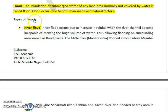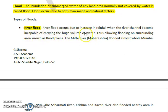Let's first talk about river flood — what it means and what the mechanics are. River floods generally happen due to too much increase in rainfall, when the river channels become incapable of carrying the huge volume of water. Whatever channel capacity is available with the river, the water exceeds it, thus causing flooding of surrounding areas.